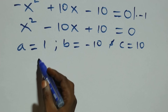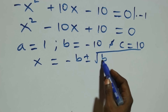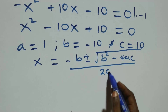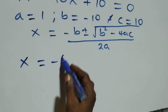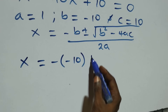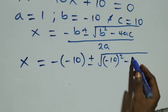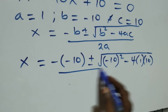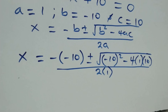Using the quadratic formula, x equals minus b plus or minus the square root of b squared minus four ac, all over two a. Substituting the values, we have x equals minus (minus ten), plus or minus the square root of (minus ten) squared minus four times one times ten, all over two times one.